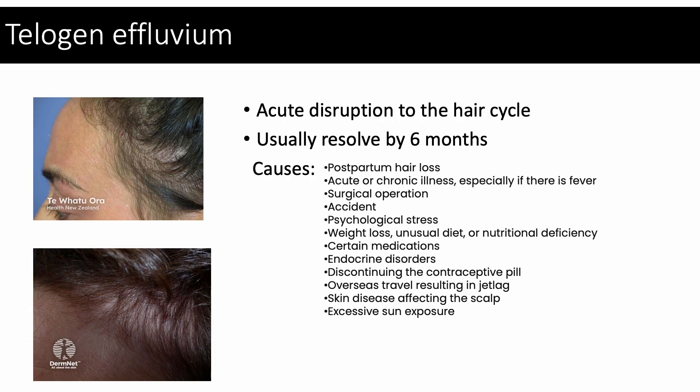Telogen effluvium results from acute disruption of the hair cycle due to some sort of shock to the system. There are several causes, for example, postpartum hair loss, undergoing a surgical operation, or psychological stress. It is characterised by excessive shedding of resting or telogen hair. Under normal circumstances, approximately 15% of scalp hair are in telogen phase, lasting approximately 3-4 months. In telogen effluvium, this proportion is changed, with more hair moved into telogen phase.